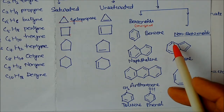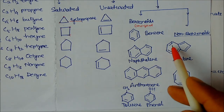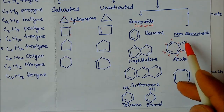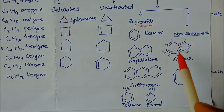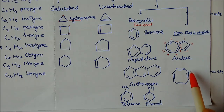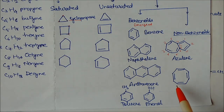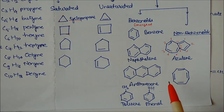Non-benzenoid aromatics also have alternating single and double bonds, but the ring is not six-membered. For example, one structure has a seven-membered ring and another has a five-membered ring — these are not six-membered. Another example is azulene, which has an eight-membered pattern. These are all non-benzenoid aromatics. All these (homocyclic) ring members contain only carbon.